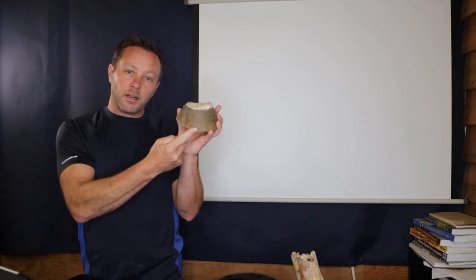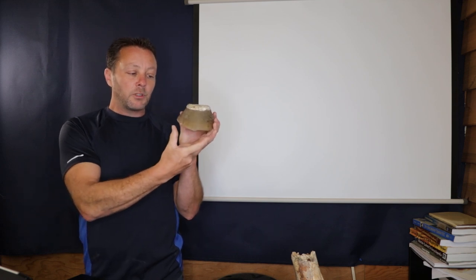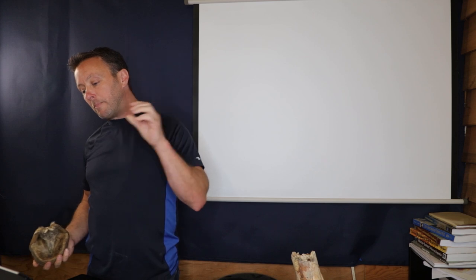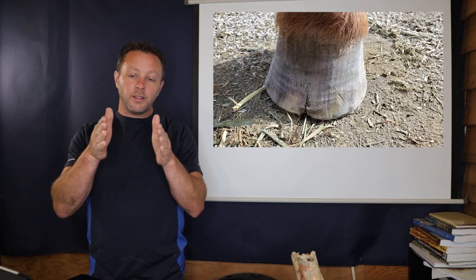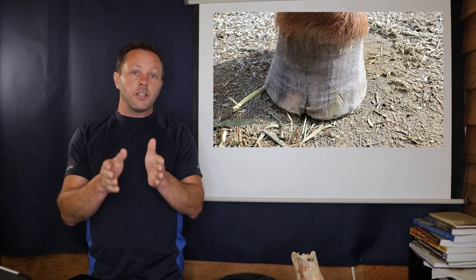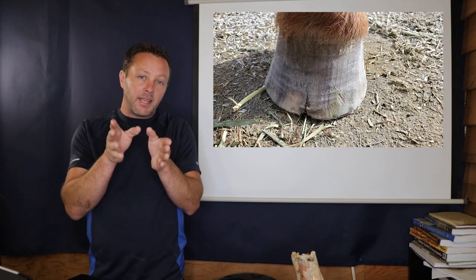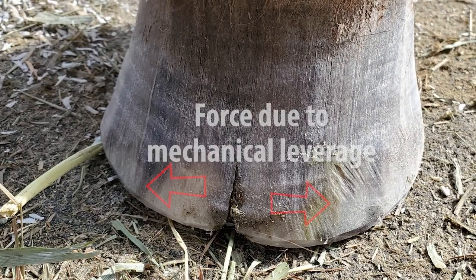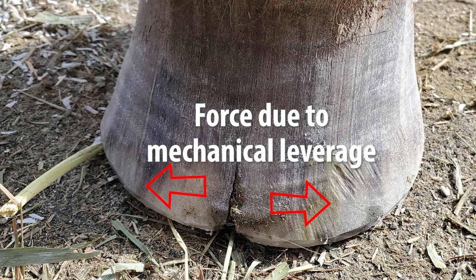So when we get a hoof that's kind of where this square bit on the front exists, we have what's called mechanical leverage on the pillars. Now going back to the picture, we can see that the crack is right in between where the two pillars are in the middle. So what's happening is the mechanical leverage of the pillars being long actually ends up splitting the hoof, and that's a big deal.